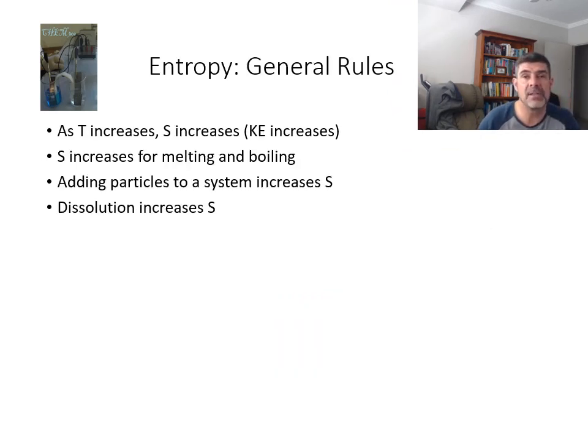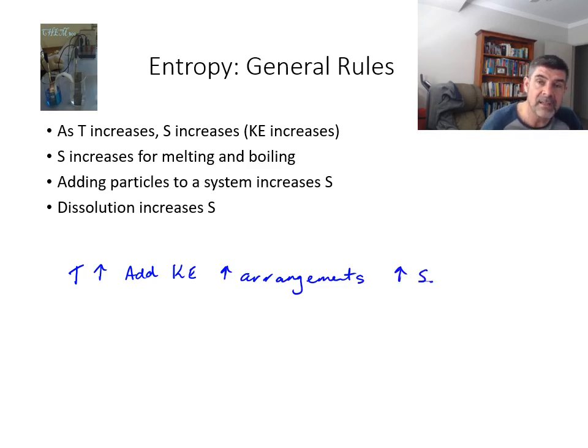The first thing we need to do is look at some general rules relating to entropy. Firstly, and most importantly, when temperature is increasing what we're doing is adding kinetic energy to the particles. Because the particles are now moving faster, there is a greater number of different patterns, different arrangements, and because there are a larger number of potential arrangements then we have an increase in the entropy.